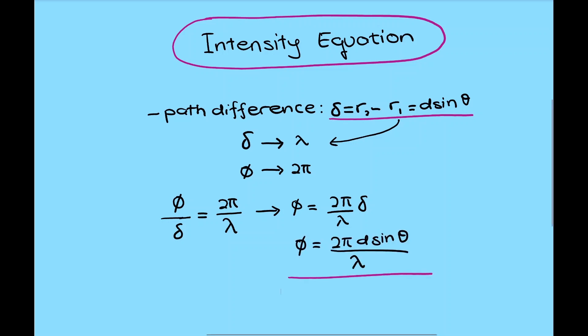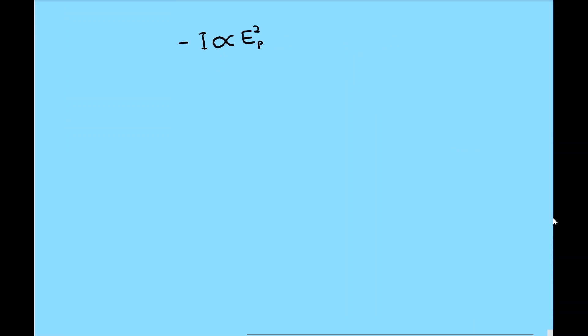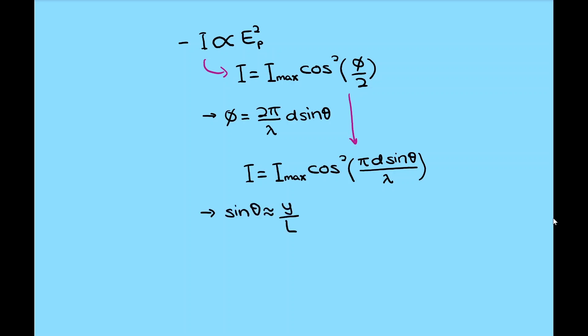As the intensity is directly proportionate to the square of the field, therefore we have the intensity is equal to I equal to I max cos square phi over 2. From the value of phi above, we can insert directly to get this. And from the sin theta approximation, we finally have the intensity equation in this form.